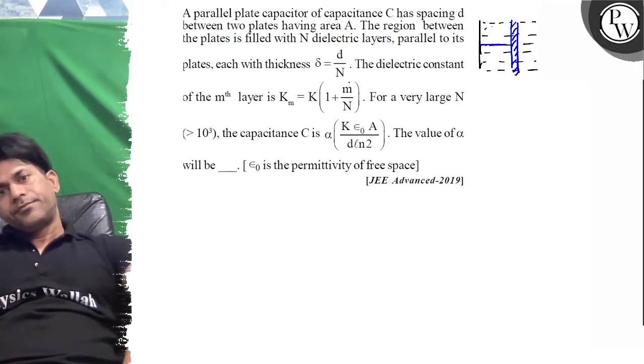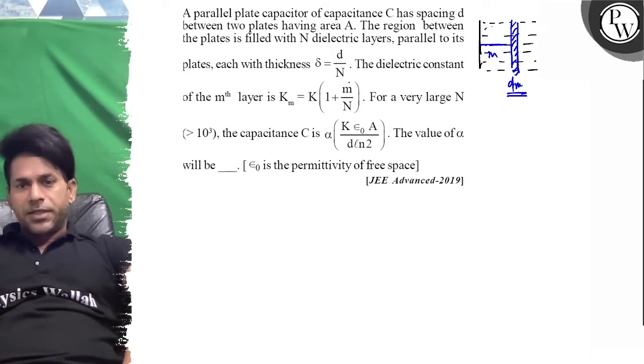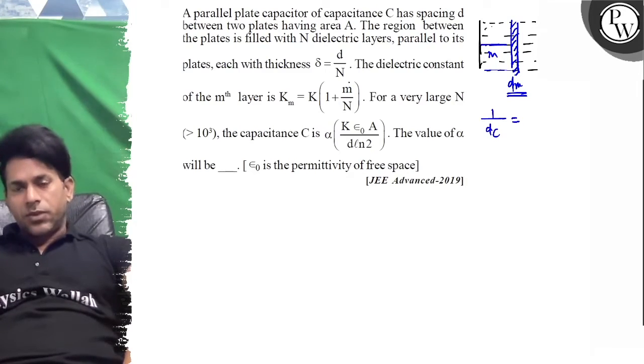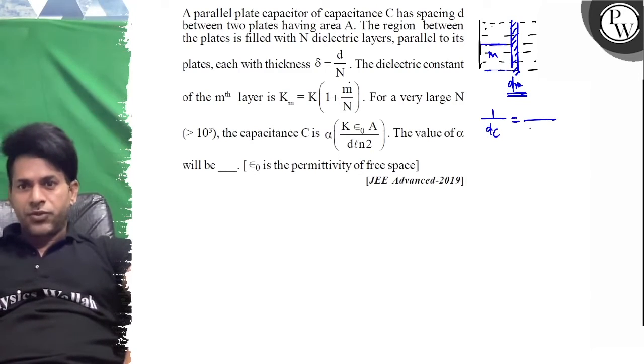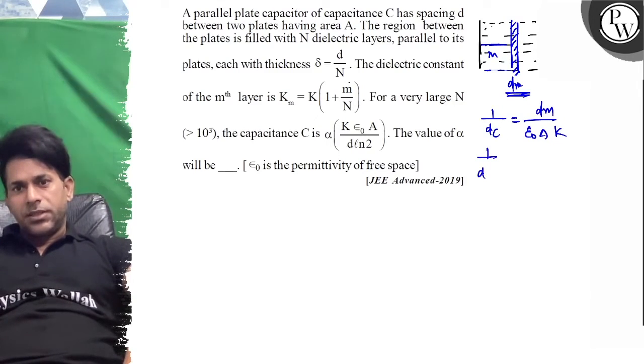This will be your dm element. So if you write for this, since all will be in series, 1 upon small dC can be written as you have...